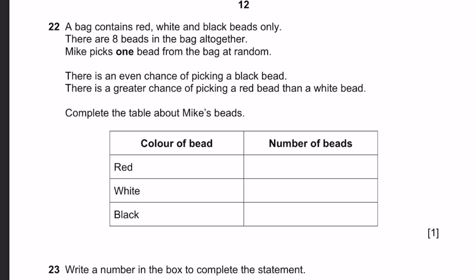Complete the table about Mike's beads. Since black is 0.5 or a 50-50 chance, we divide 8 by 2 to get the number of black beads, which is 4. Now the probability of getting red is greater than white, which means it's either 4-0 or 3-1 with the remaining 4 beads. Since you cannot have 0 white beads because it contains all 3 colors, the numbers are 3 red and 1 white.